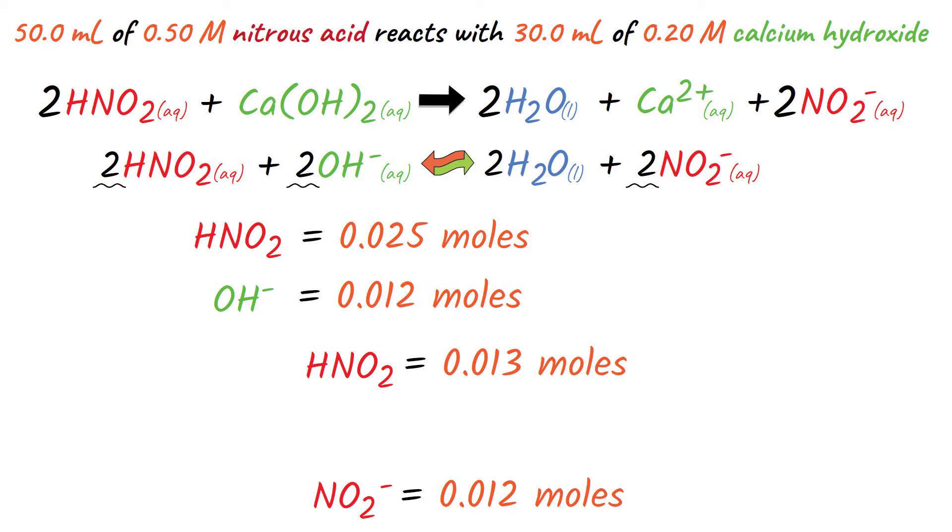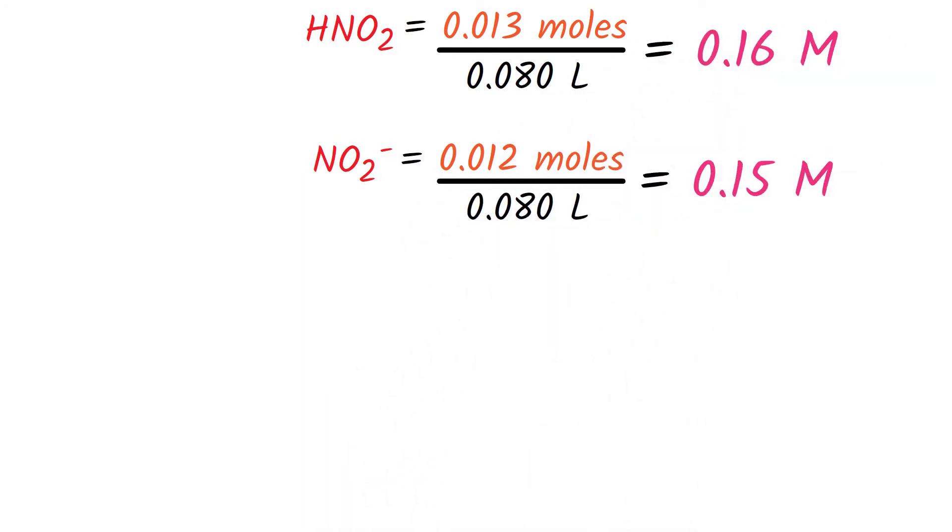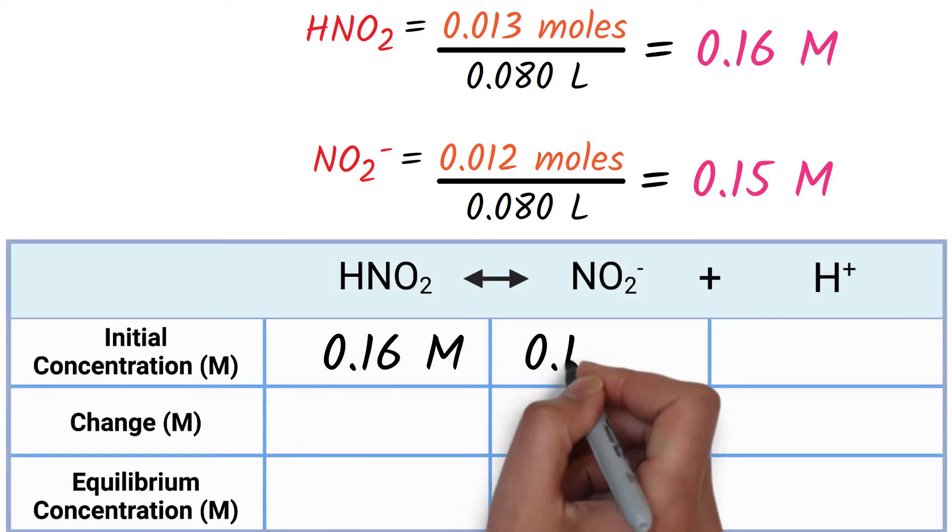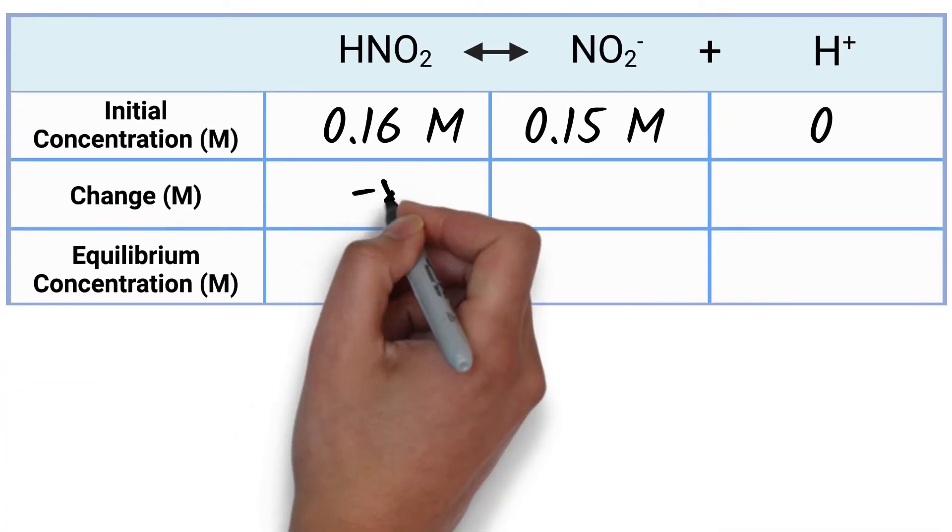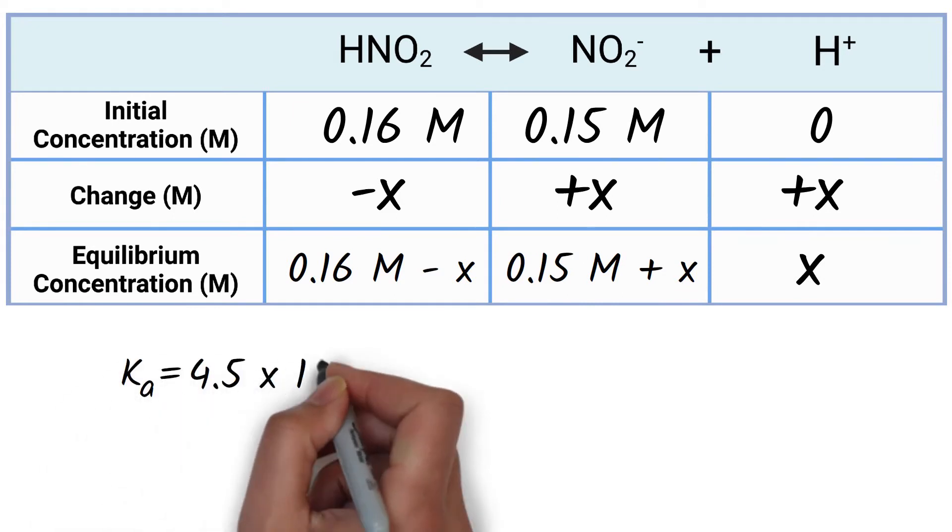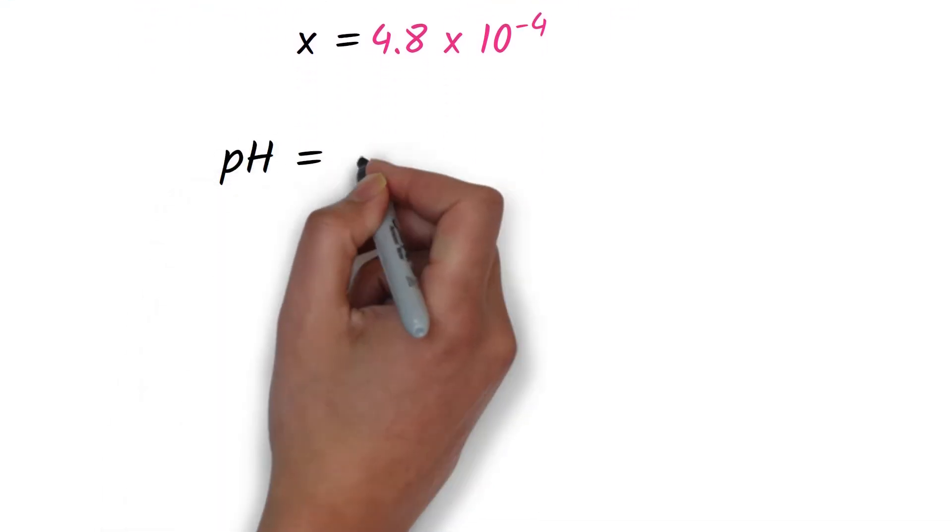Since we have an equilibrium now between the conjugate base and the weak acid, we need to set up an ICE table to calculate the final concentrations of the pH of this solution. Our total volume is 50 mils plus 30 mils. We then divide the 80 mils by the moles of each to get our initial concentration. So, 0.16 molar nitrous acid and 0.15 moles nitrate. We plug these values into our ICE table and solve for X using the Ka for nitrous acid. We get X is equal to the proton concentration and equals 4.8 times 10 to the minus fourth molar. Thus, the pH is 3.32.